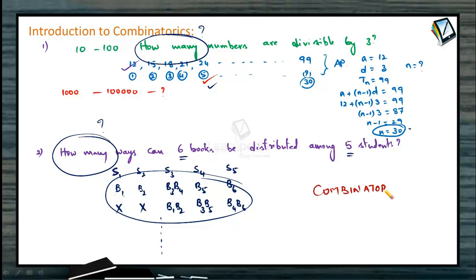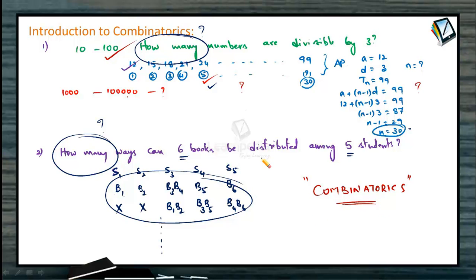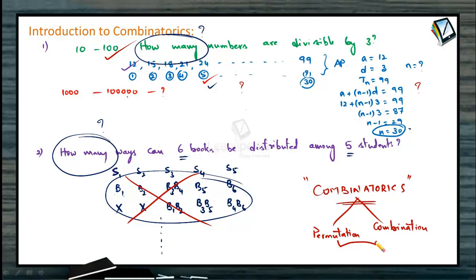Combinatorics will help us find how many numbers are divisible by 3, whether the range is 10 to 1000 or 1000 to 1 lakh, without individually counting each one or using standard algebraic operators. Similarly, for non-numerical cases like distributing 6 books among 5 students, combinatorics offers a method to evaluate the total number of possibilities. This topic is divided into two major parts: permutation and combination, both based on the fundamental principles of counting.